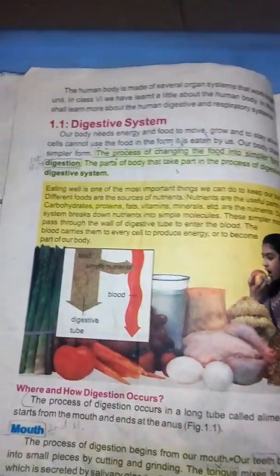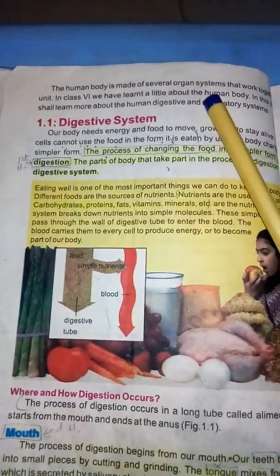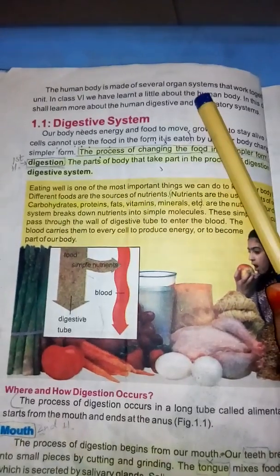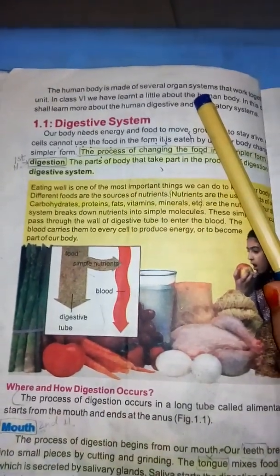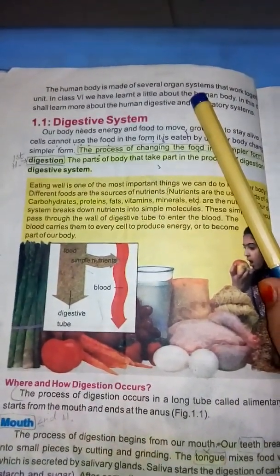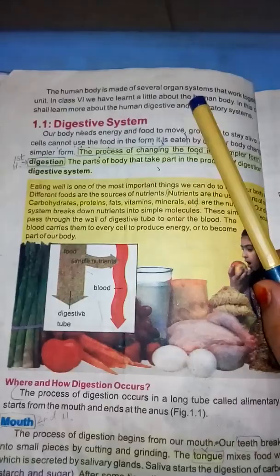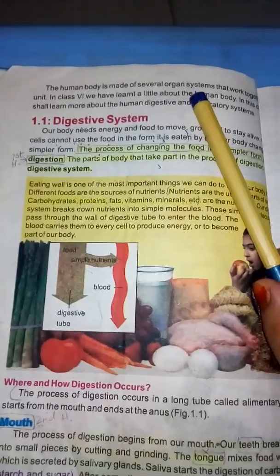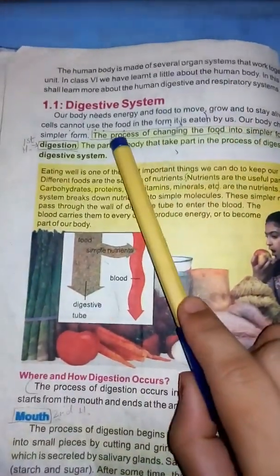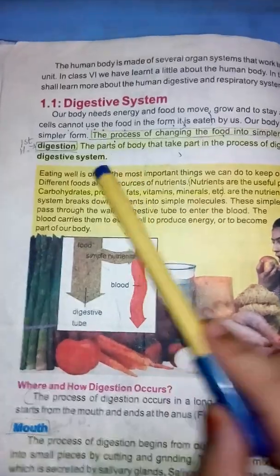Organ system kya hai? Yahan pe organ system ke baare mein aapne padha — ek aisa nizam jo mukhtalif organs se milkar bana hota hai. An organ system is a system which consists of many organs. The first part is the digestive system.